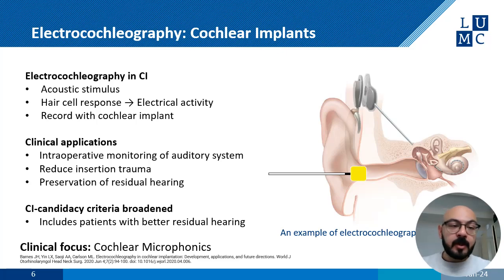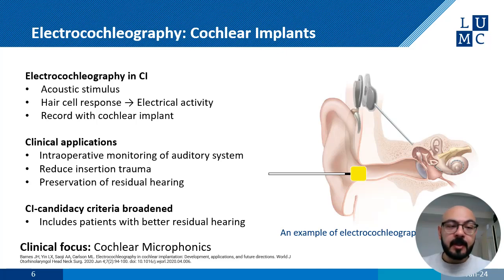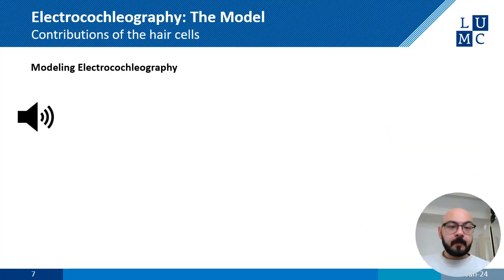We are going to be focusing on the cochlear microphonic potential of the total ECoG response, since it can assist us during cochlear implantation surgery. Cochlear microphonics is generated primarily from the outer hair cells. I would like to explain how our ECoG model functions. First, we present a stimulus to the model — usually a pure tone burst of short duration — which then acts as input to our auditory model.